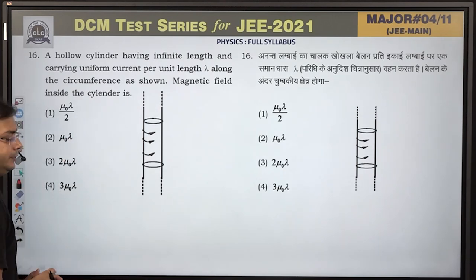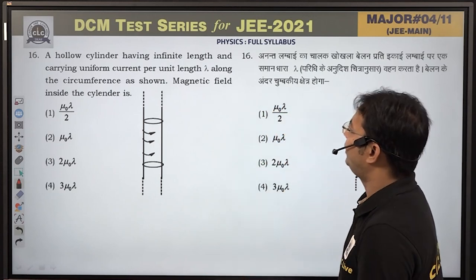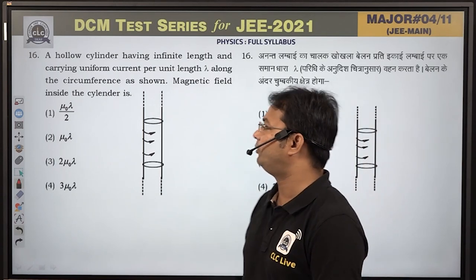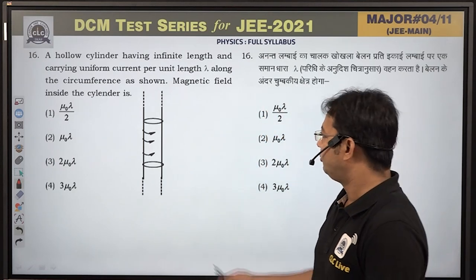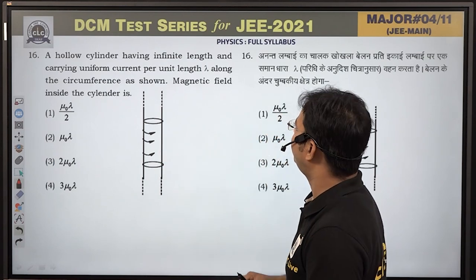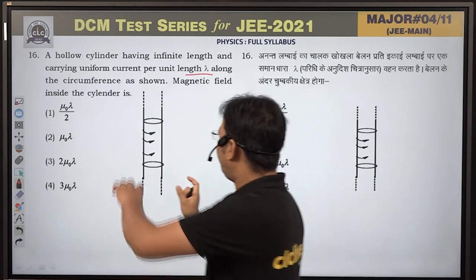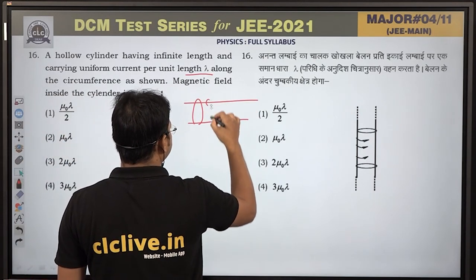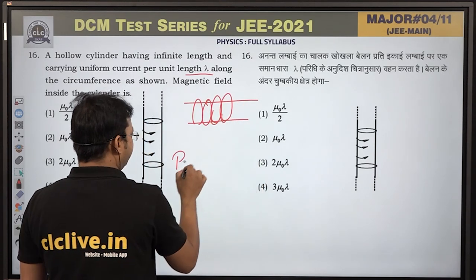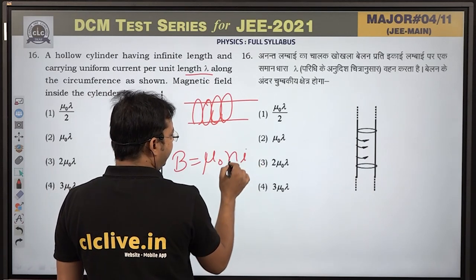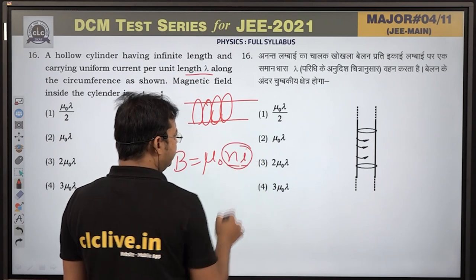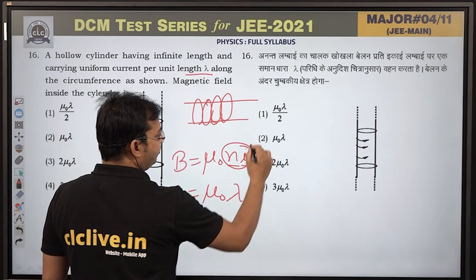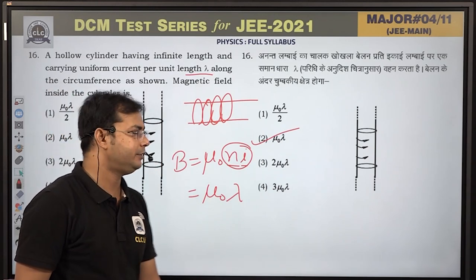Question number 16: A hollow cylinder of infinite length carries uniform current per unit length λ along its circumference. This is equivalent to an infinitely long solenoid. The magnetic field inside is B = μ₀nI = μ₀λ. Option number 2 is correct.